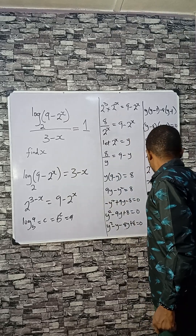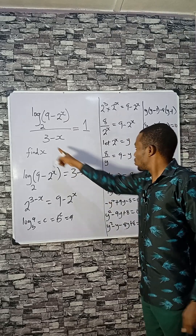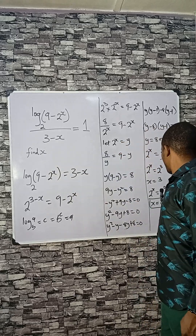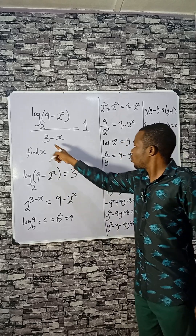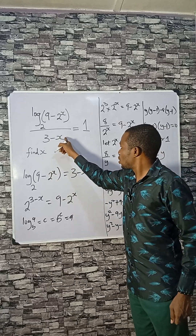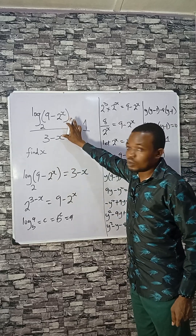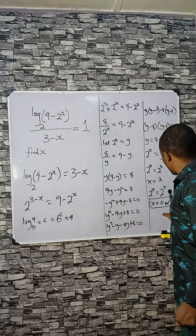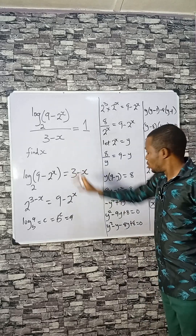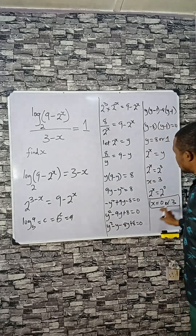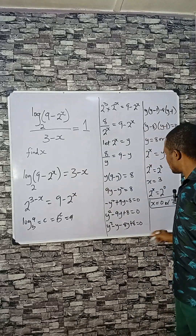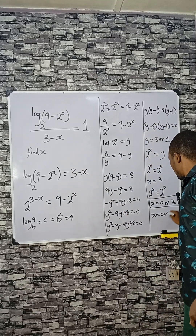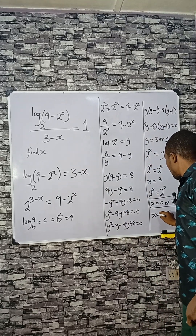Checking the domain: if x equals 3, then 3 minus 3 equals 0, which makes the equation undefined. Considering the domain of the denominator, the valid answer is x equals 0.